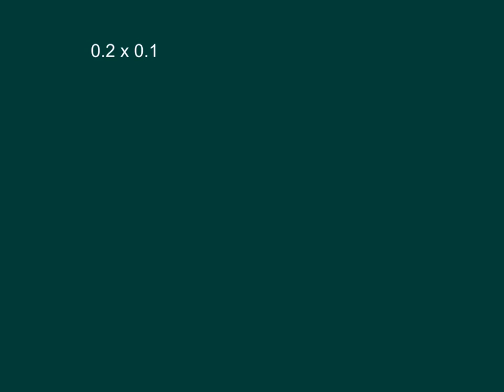Here we have two-tenths times one-tenth. Let's write that out. Two-tenths times one-tenth is equal to two-hundredths, which is written as 0.02.